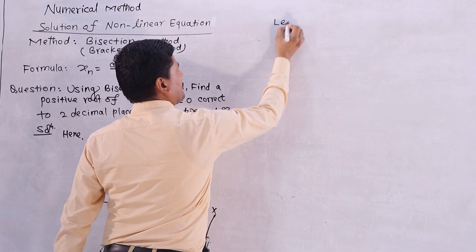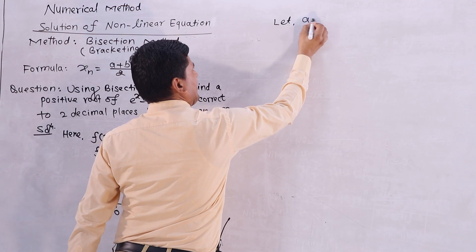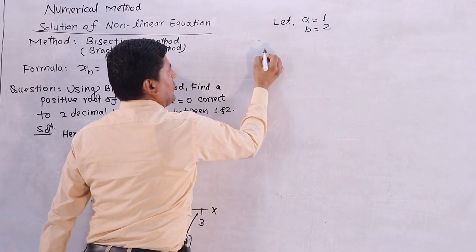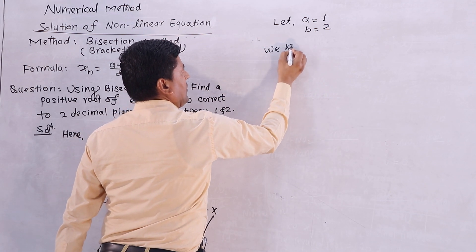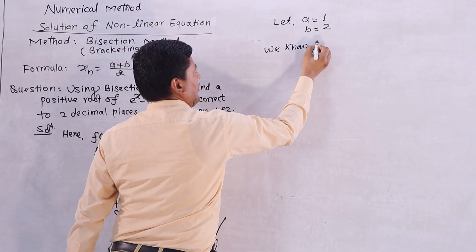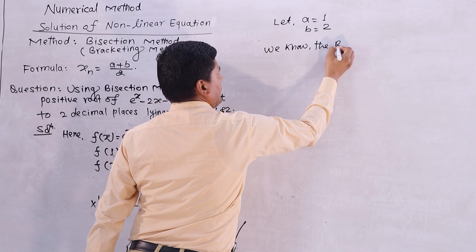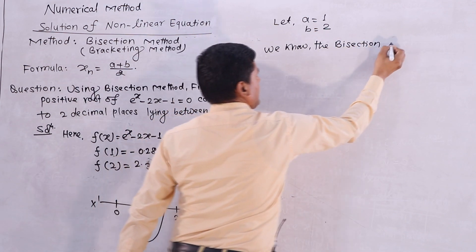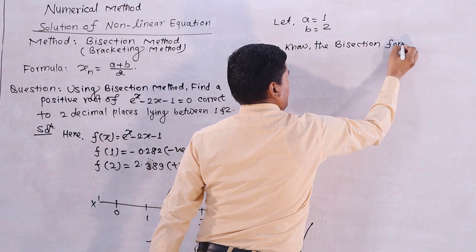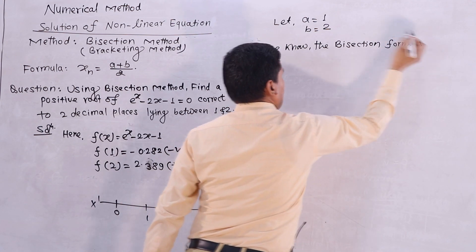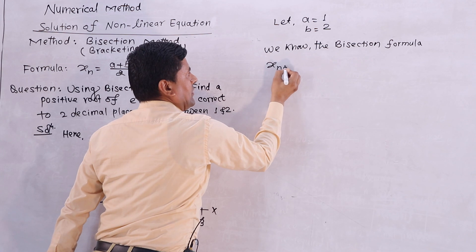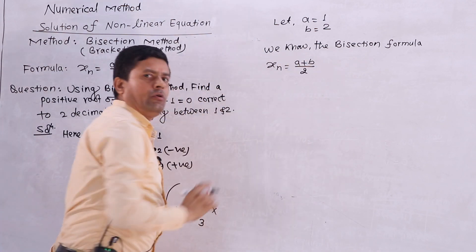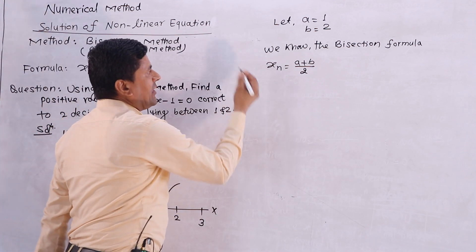Let a = 1 and b = 2. We know the bisection formula: x_n = (a + b) / 2. I will now tabulate the successive approximations in a table with columns: iteration number, a, b, x_n = (a + b) / 2, and f(x_n).